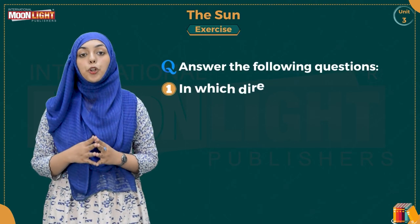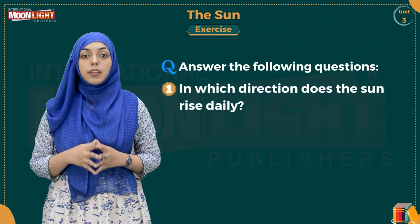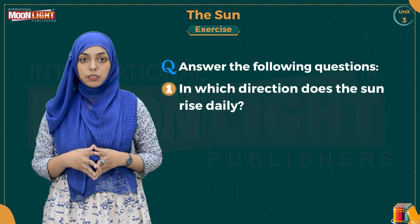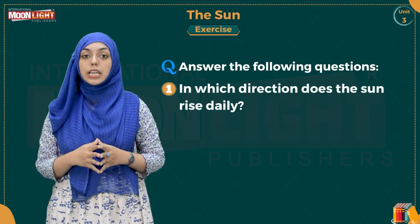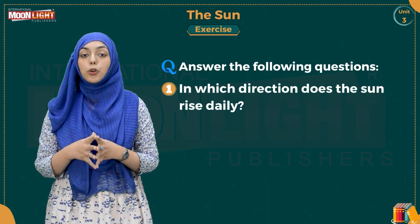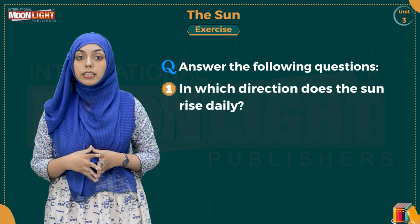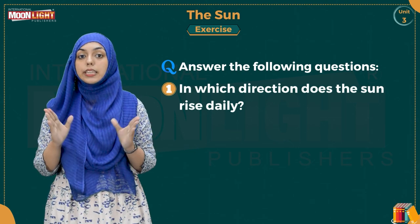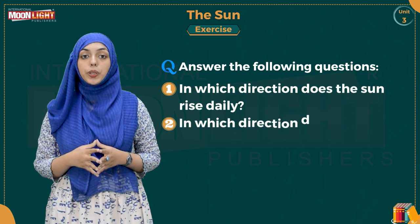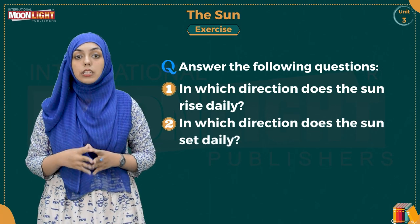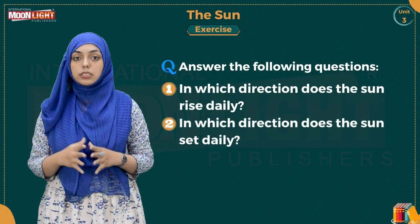Now we will do the exercise on page number 26. Question number 1: In which direction does the sun rise daily? The sun rises in the East. Question number 2: In which direction does the sun set daily? The sun sets in the West.